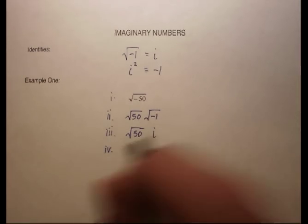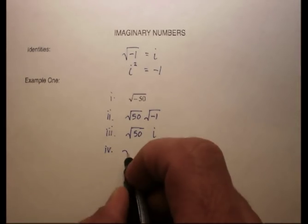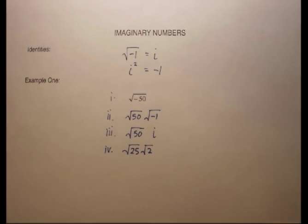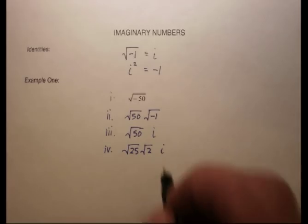Now, I know that the square root of 50 can be divided up into the square root of 25 times the square root of 2. Let me just bring that i down here.